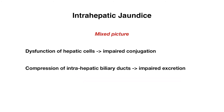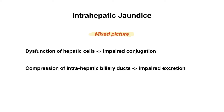Let's move on to intrahepatic jaundice, which I'd like you to think of as a mixed picture of prehepatic and posthepatic. This is because you get a dysfunction of hepatic cells, which leads to impaired conjugation and therefore an increase in unconjugated bilirubin. But at the same time, you can also have compression of the intrahepatic biliary ducts, leading to impaired excretion even after conjugation has taken place — so you would also have an elevated conjugated bilirubin. You have a mix of both elevated unconjugated and conjugated bilirubin. The next slide is a summary of different causes of prehepatic, intrahepatic, and posthepatic jaundice for your own review.